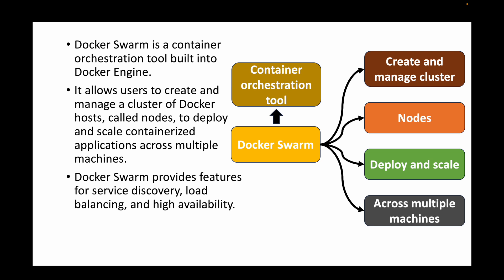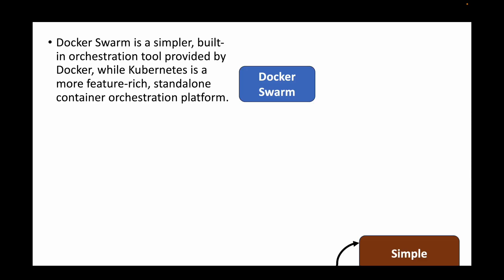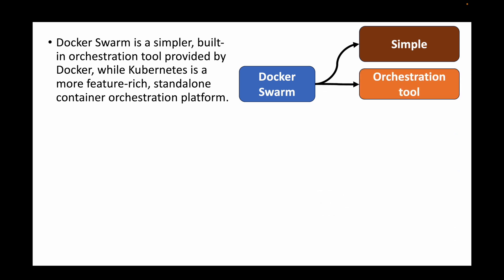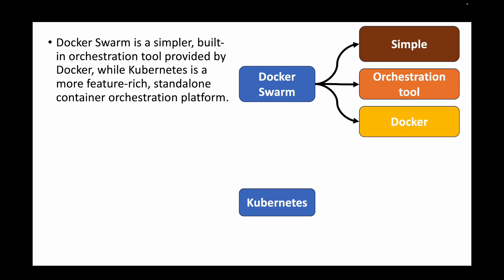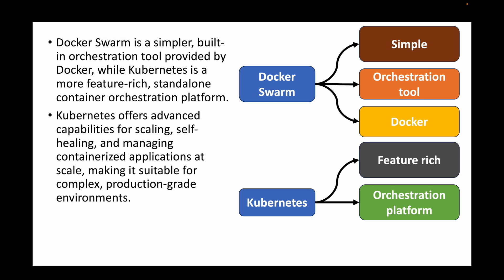The next question is: what is the difference between Docker Swarm and Kubernetes? Docker Swarm is a simple, built-in orchestration tool provided by Docker, whereas Kubernetes is a more feature-rich, standalone container orchestration platform. When it comes to features, Kubernetes always wins — it provides advanced capabilities for scaling, self-healing, and managing containerized applications at scale, making it suitable for complex, production-grade environments.